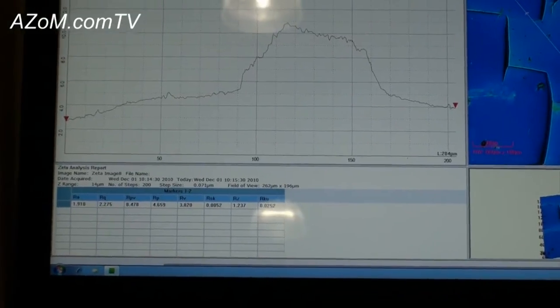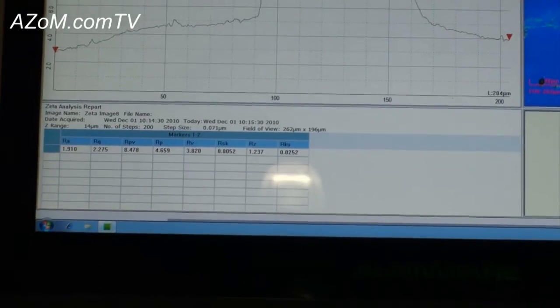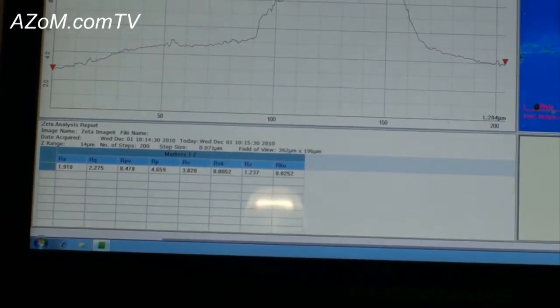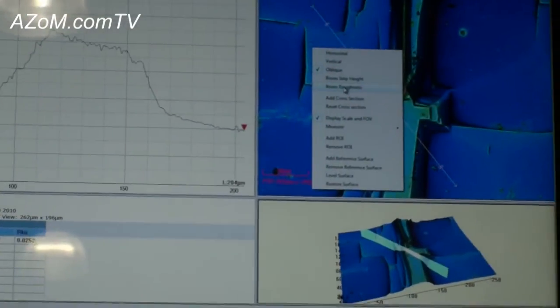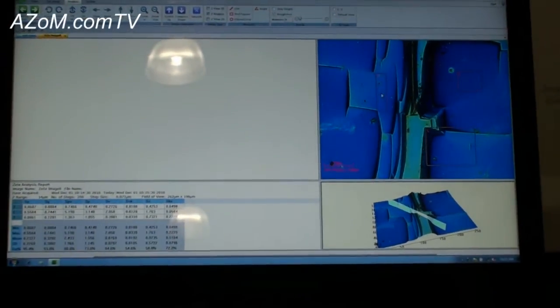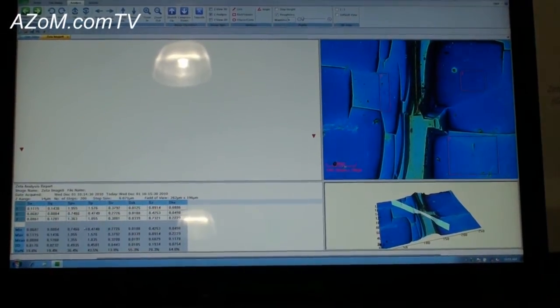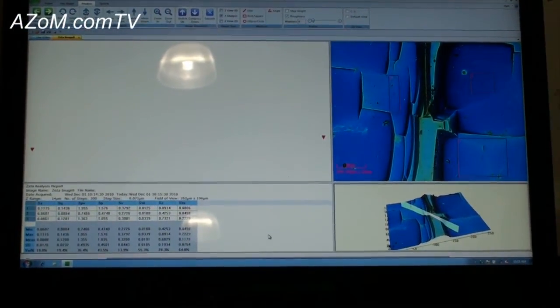Peak valley, and then some of the statistical information about the shape and the distribution. Likewise, I can actually measure these as box step heights or box roughness. So for example, if I was interested in these particular regions, depending on where I put the boxes.